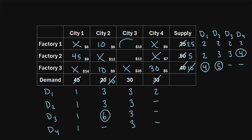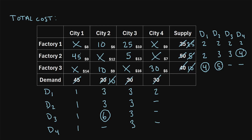Now only two cells remain. For city three, factory one must supply 25 units since that's all that's left in that row, and factory two must supply 5 units since that's the only remaining value. The 25 plus 5 meets city three's total demand of 30, so the total demand is met. This is our final answer. To calculate the total cost, we multiply the number of units shipped in each allocated cell by the unit shipping cost.